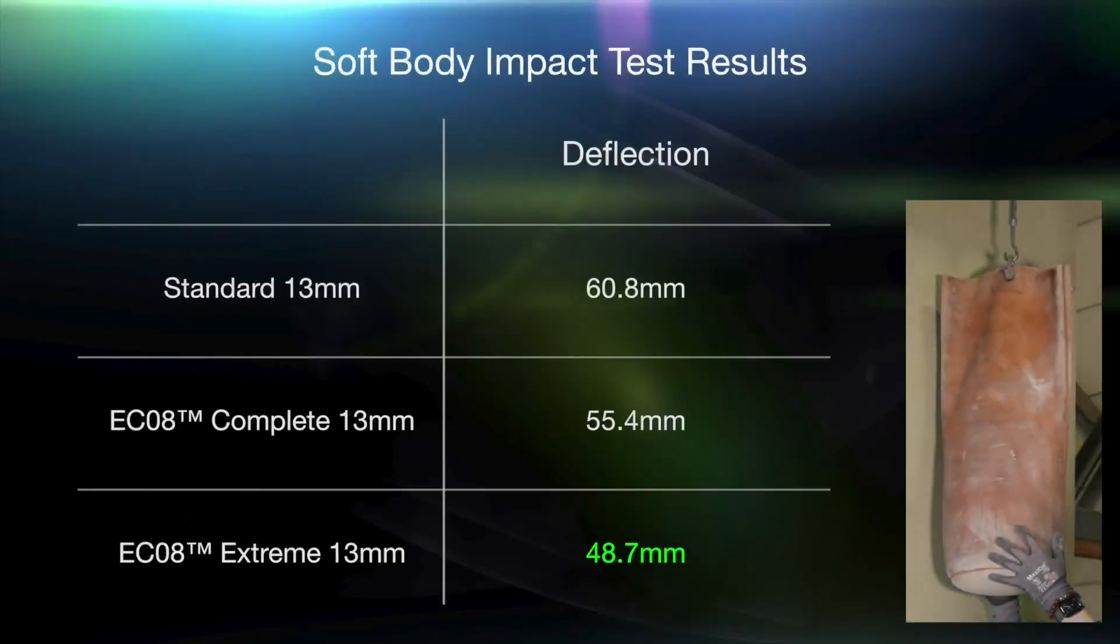In this specimen setup, standard 13mm plasterboard showed a deflection measure of 60.8mm. EC08 Complete performed far better at 55.4mm and EC08 Extreme was 48.7mm, or a 12% better performance than EC08 Complete.